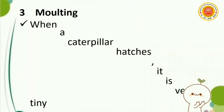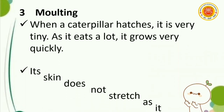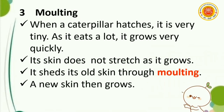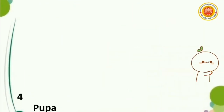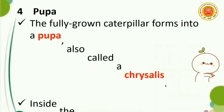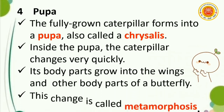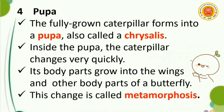Siklus ketiga adalah berganti kulit. Saat ulat menetas, ukurannya sangat kecil. Karena banyak makan, ia tumbuh sangat cepat. Kulitnya tidak meregang saat tumbuh, sehingga ia melepaskan kulit lamanya melalui pergantian kulit, dan kulit baru kemudian tumbuh. Siklus keempat adalah kepompong. Ulat dewasa membentuk kepompong, juga disebut chrysalis. Di dalam kepompong, ulat berubah dengan sangat cepat — bagian tubuhnya tumbuh menjadi sayap, dan bagian tubuh lain menjadi kupu-kupu. Perubahan ini disebut metamorfosis.